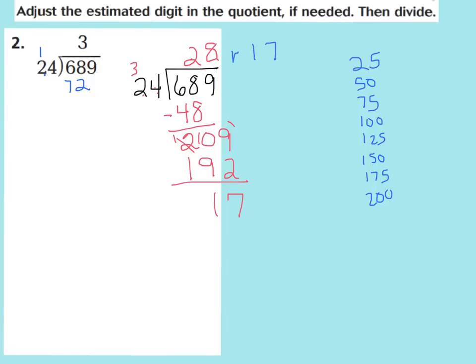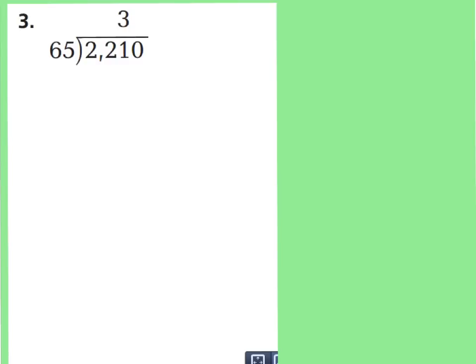We had to adjust our quotient from a 3 estimate down to 2 tens. Let's look at question number 3: 2,210 divided by 65. Let's see if we have to adjust this estimate.